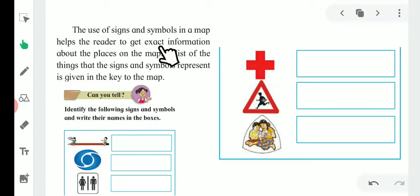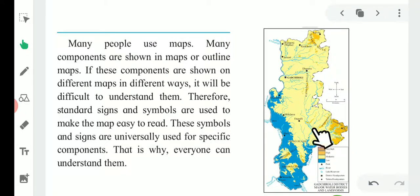The use of signs and symbols in the map helps the reader to get exact information about the place on the map. A list of the things that the signs and symbols represent is given in the key of the map. The symbols and signs are given there.